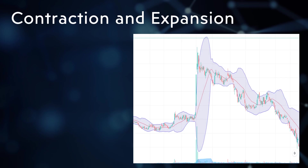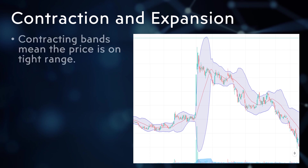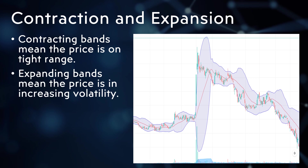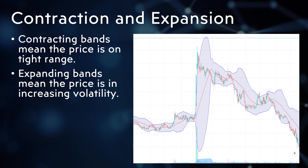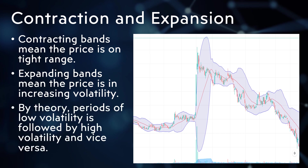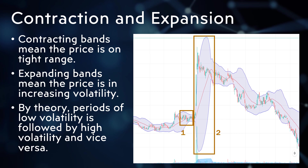Another signal that Bollinger Bands create is the contraction and expansion of the bands. Contraction happens when the price is in a tight trading range, while expansion happens when there is an increase in price volatility. By theory, periods of low volatility are likely to be followed by periods of high volatility, and vice versa. In this chart, we can see the bands expanding and contracting as the price undergoes cycles of consolidation and increased volatility.